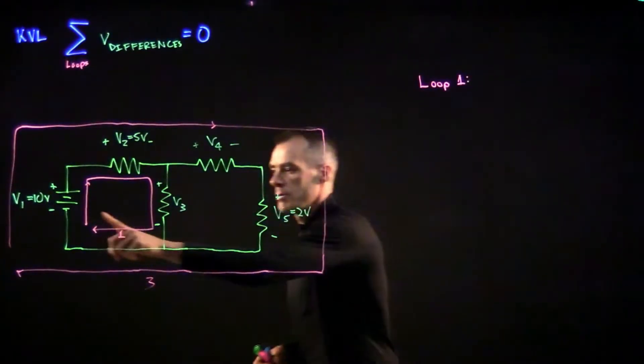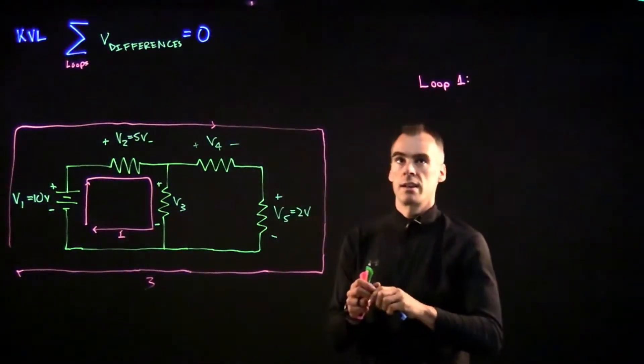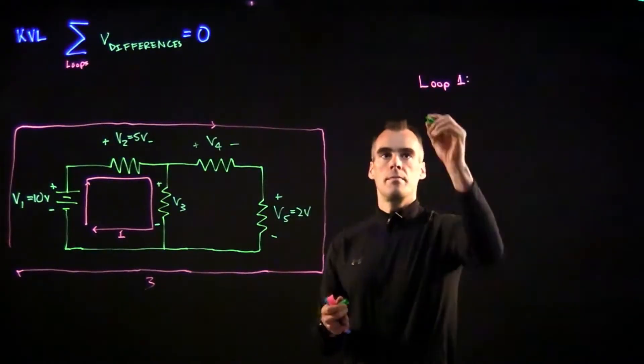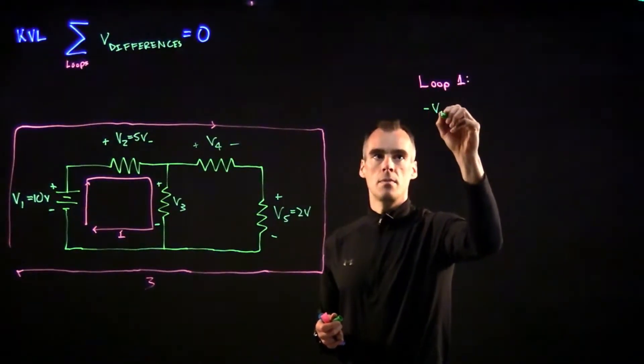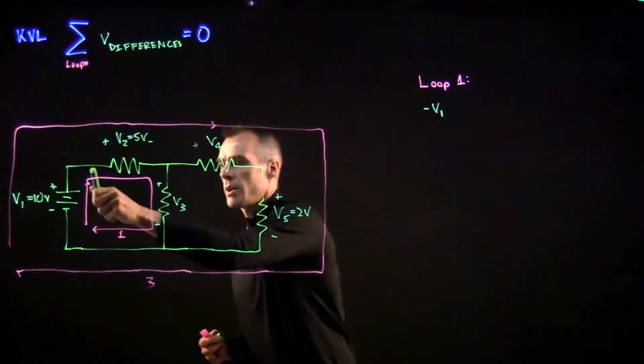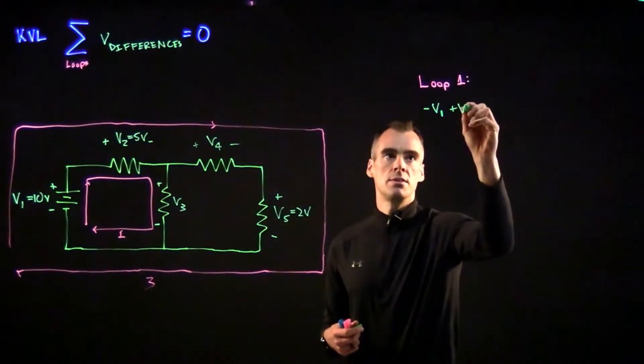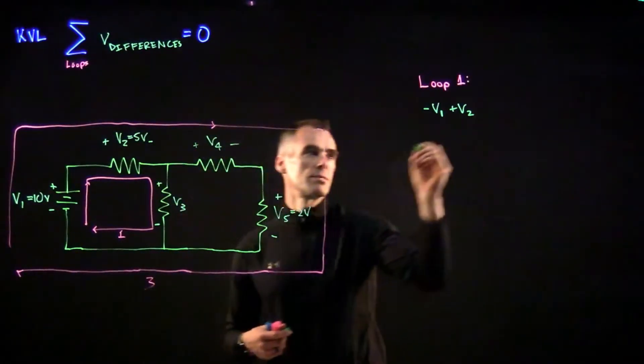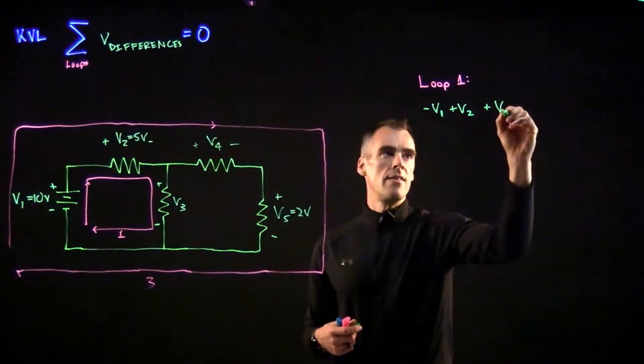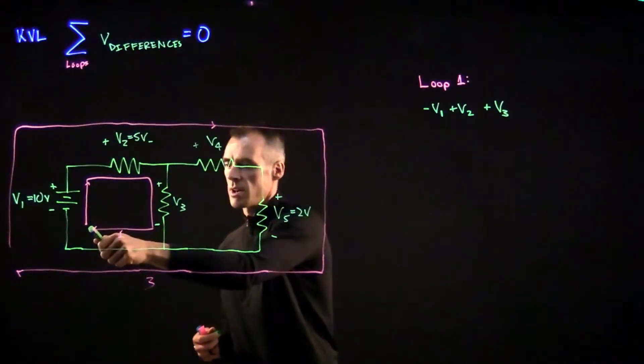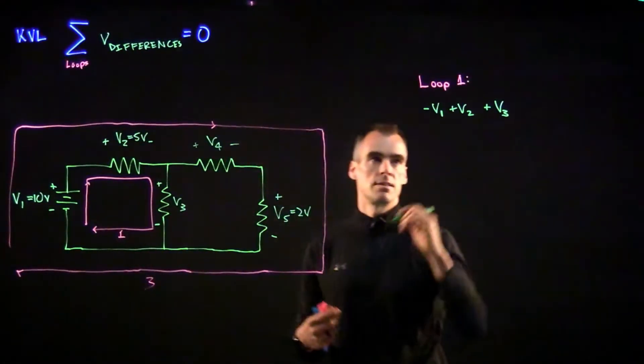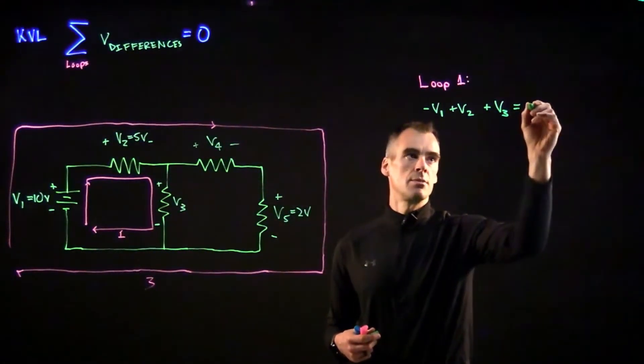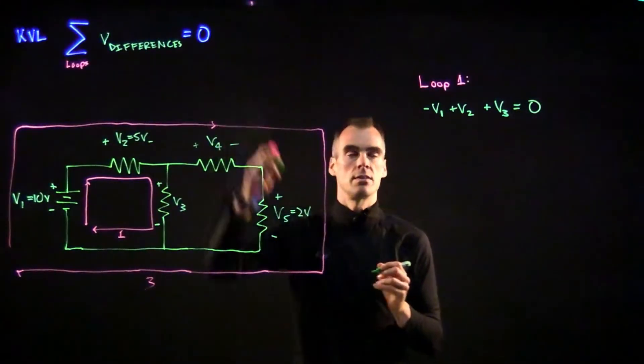So since we run into that minus first, let's go ahead and plug that minus in. So we start with minus V1, and then we keep going and we're going to hit the plus side of V2. So we're going to go plus V2, and if we keep going around this loop, we're going to hit the plus side of V3. So we'll say plus V3, and then we're going to get back to our starting location. So now we can just sum all these up and set that equal to zero per KVL's equation.